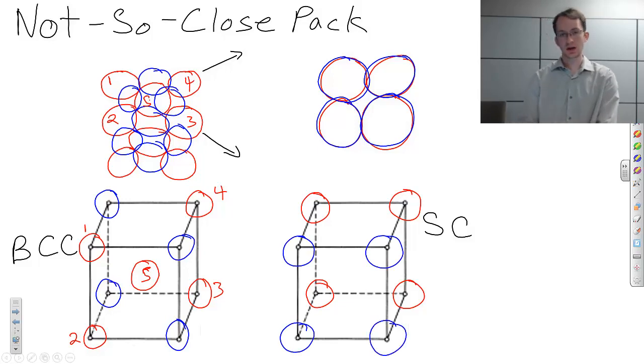Now, simple cubic, there are no atoms in the faces of the cube. And there are no atoms inside the center of the cube. For body-centered cubic, you have an atom in the center of the cube. For face-centered cubic, you have atoms on the faces, but no atoms in the center. And hexagonal close-packed looks hexagonal.